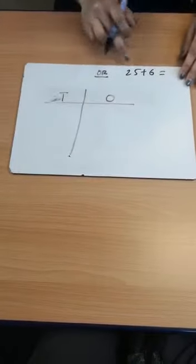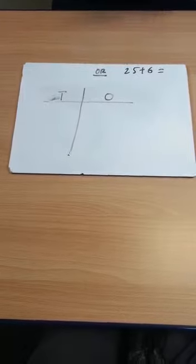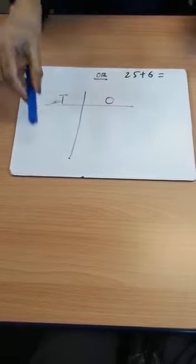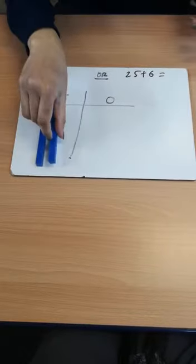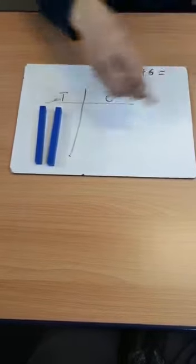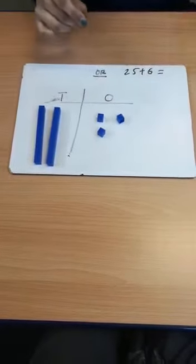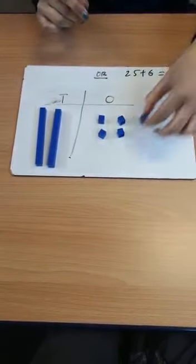There's another way we can do this where we're going to use the tens and ones frame. So we know 25 plus 6 equals. We're going to be looking at 25, which has got two tens and five ones.